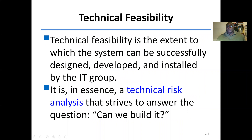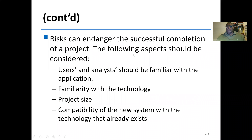We also discuss organizational feasibility. Technical feasibility is the extent to which the system can be successfully designed, developed, and installed by the IT group. We want to know if the technology is new or existing. In a sense, it is a technical risk analysis that strives to answer the question: can we build it? Risk can endanger the successful completion of a project. Aspects to consider include familiarity with the technology, project size, and compatibility of the new system with existing technology.